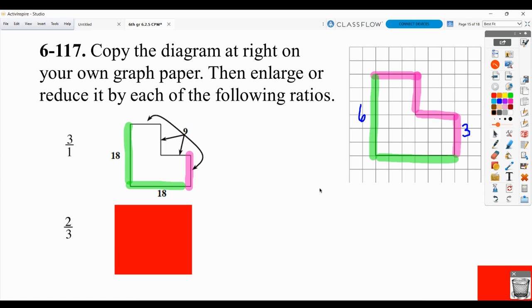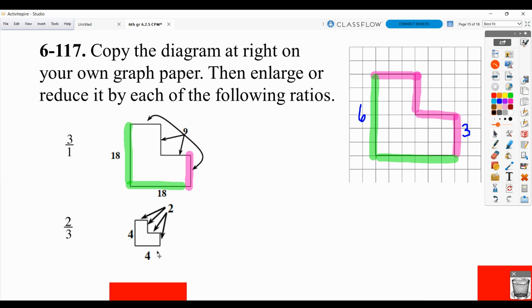For this one, you're going to multiply those same lengths by 2 thirds. Well, if you take 3 times 2 thirds, you're going to get a length of 2. So now it will be 2, 2, 2, and 2. And then 6 multiplied by 2 thirds would be lengths of 4.